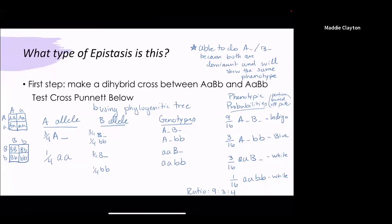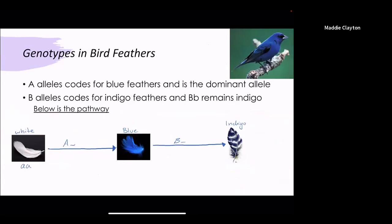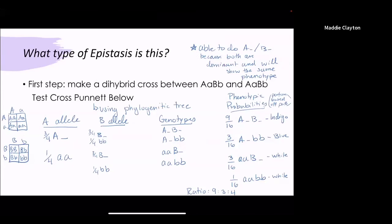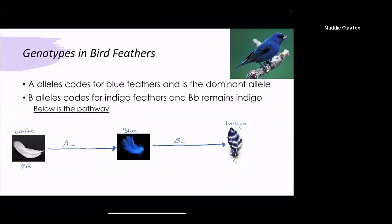When you take this and look at the phenotypic probabilities you notice that you still have that 9:3:3:1 ratio when you do just some math. However when you look at the portions based off the previous path which you can see here you find that the big A and big B lead to indigo which was assumed. The big A little B will only lead to blue because you no longer have a dominant B to take it all the way to indigo.